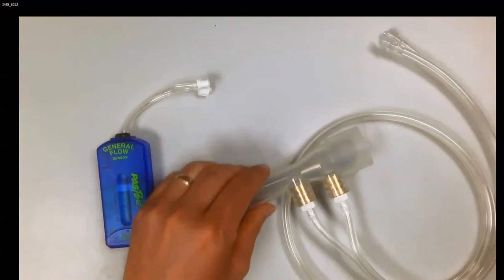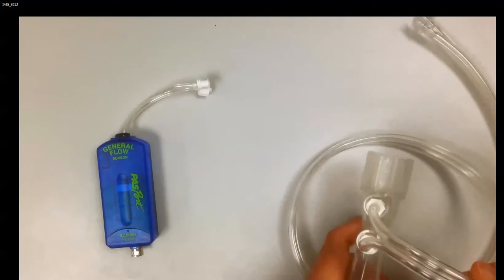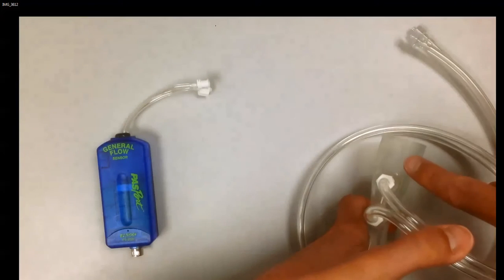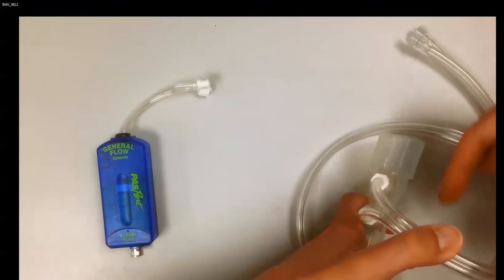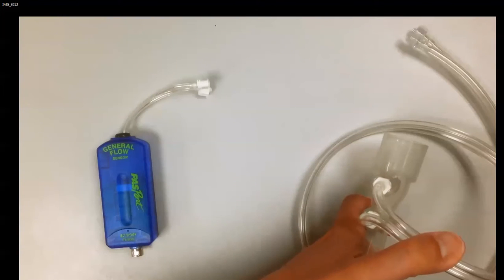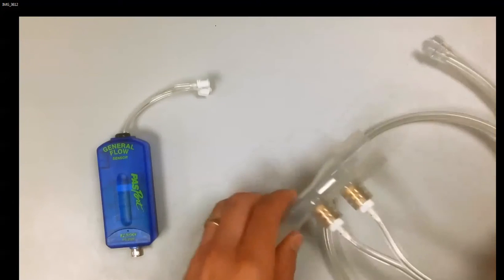When placing the Venturi tube into your flow network, please make sure to mount it in the correct direction so that the flow goes through the tube properly. Reverse flows can damage the general flow sensor, so please make sure the flows are going in the correct direction.